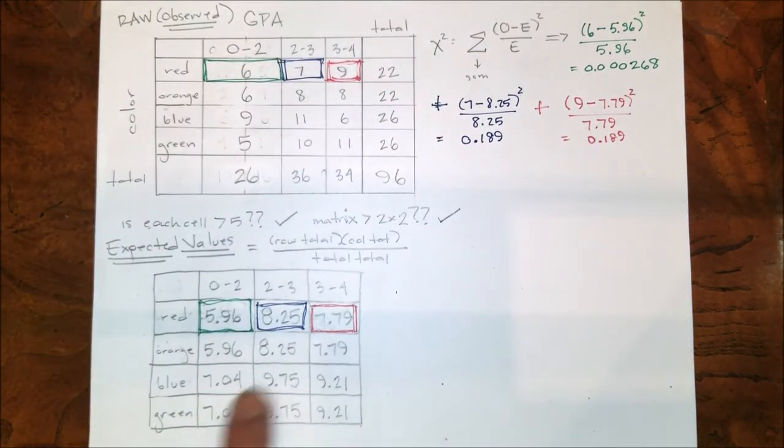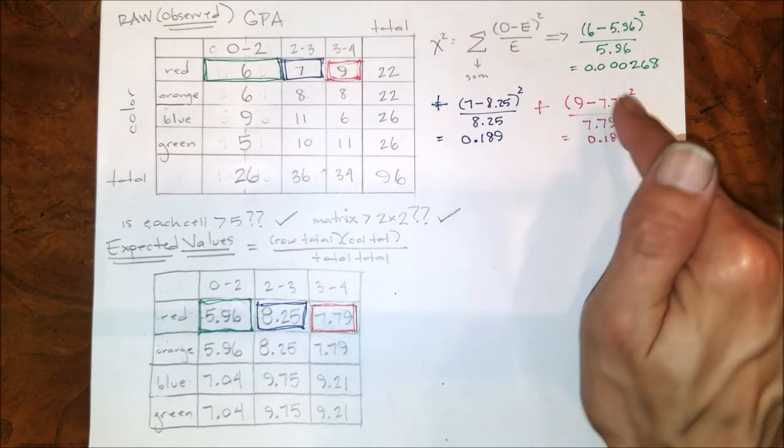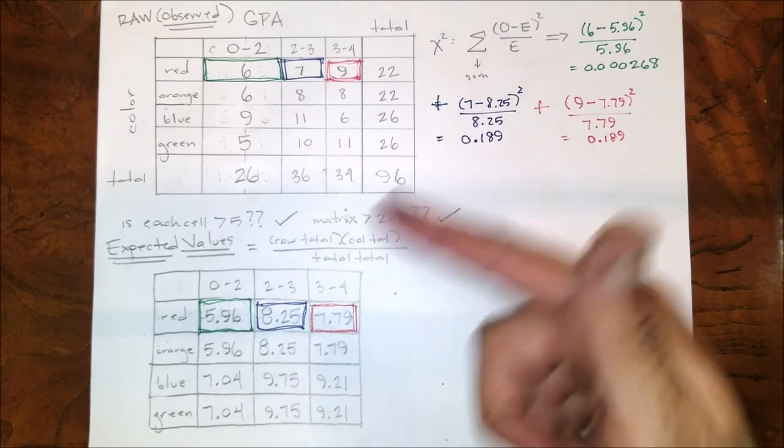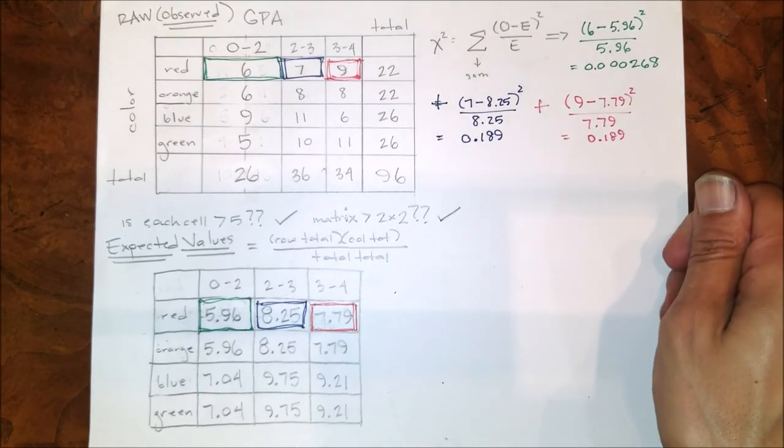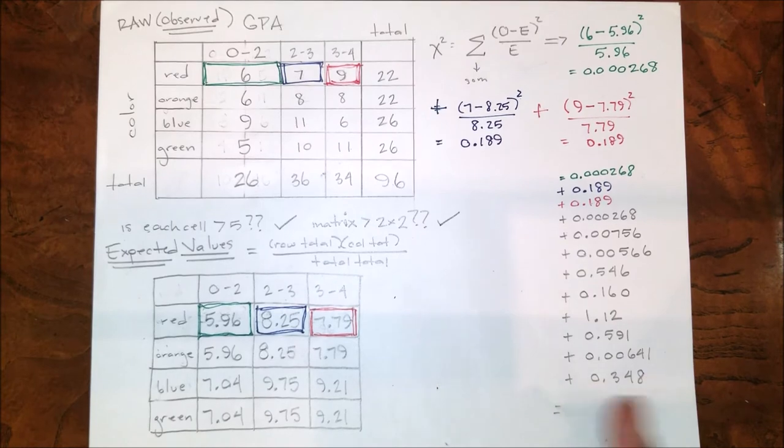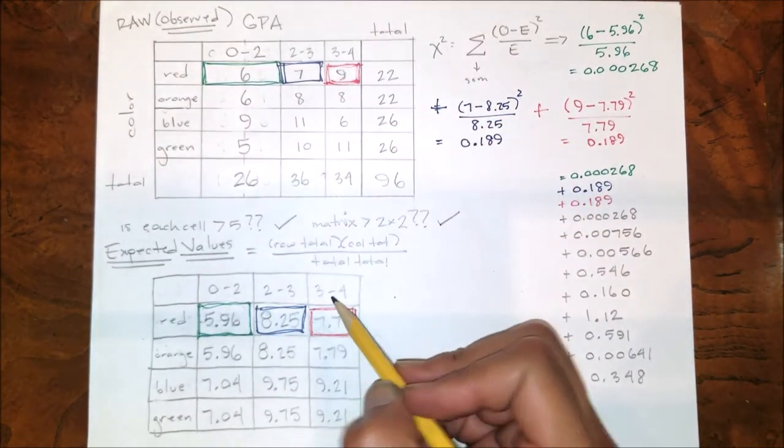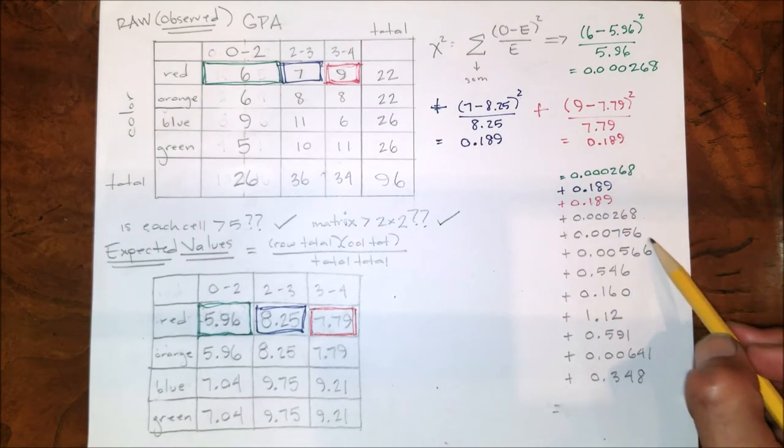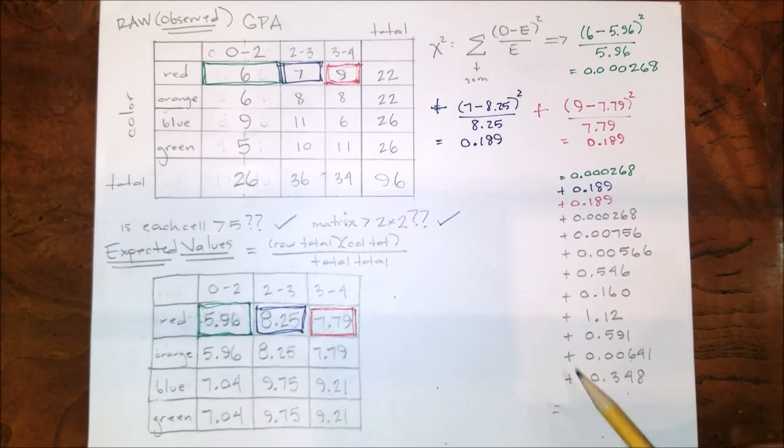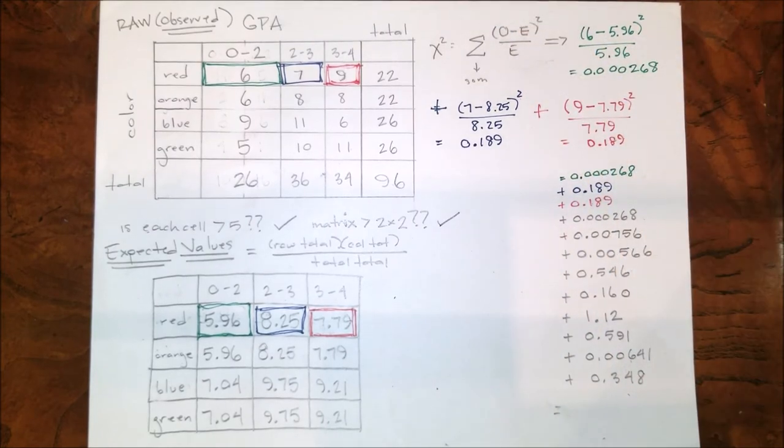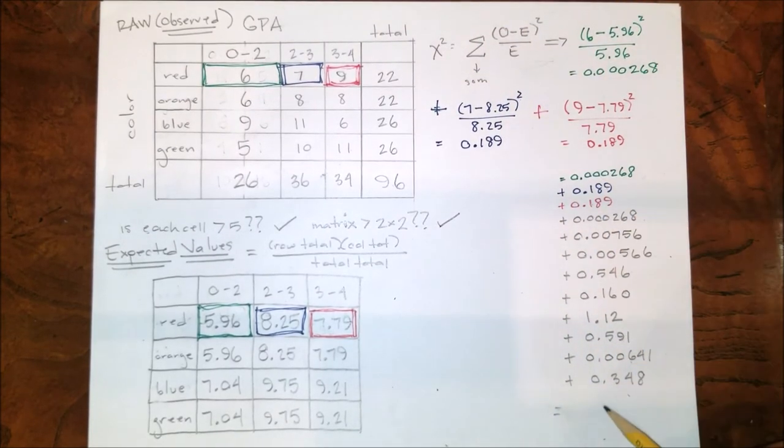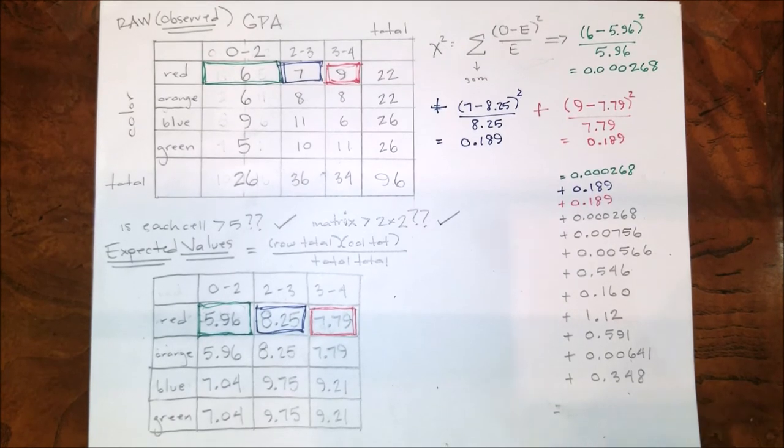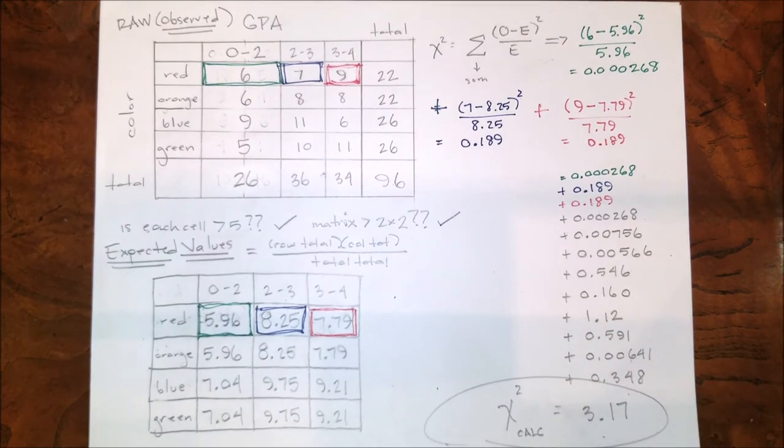So at the end of all of this, after I'm finished totaling all of this. After you repeat this process for all 12 cells, you'll have 1, 2, 3, 4, 5, 6, 7, 8, 9, 10, 11, 12 results of this particular equation. This summation means you add all of them together, and when I do that, that's my chi-square calculated value.